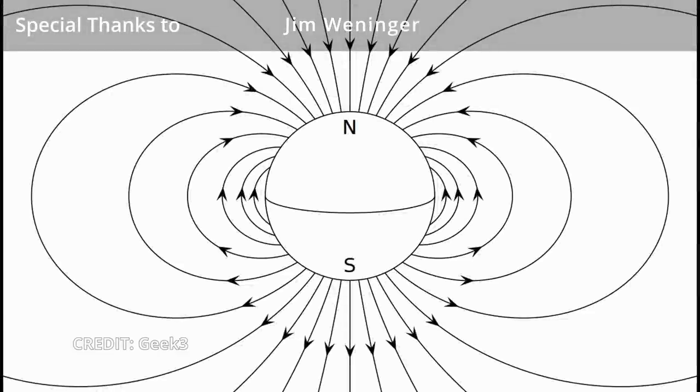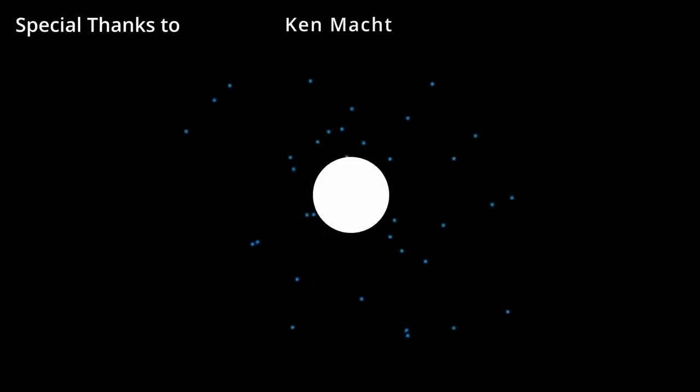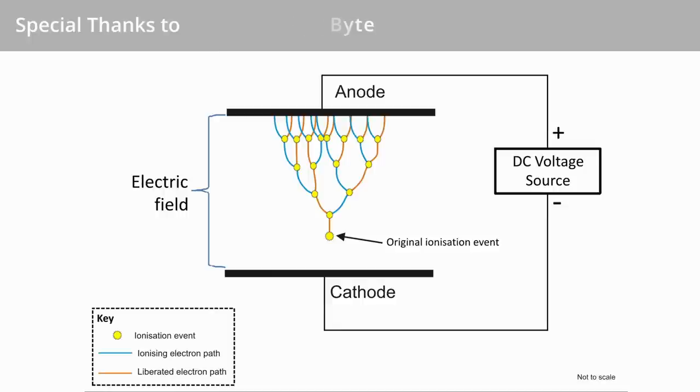Before we discuss the effects a magnetic field has, we need to first discuss the properties of the cathode. Specifically, a cold cathode. This is a cathode that is not electrically heated to generate electrons. The surface of cold cathodes can emit secondary electrons at a ratio greater than unity.